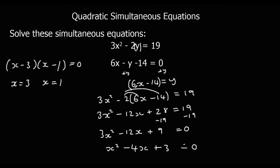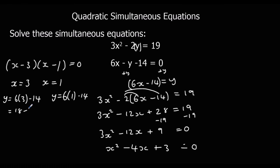Now to find the y values I substitute into y equals 6x minus 14. So y equals 6 times 3 minus 14, which is 18 minus 14 equals 4. Or y equals 6 times 1 minus 14, which is 6 minus 14 equals minus 8. So our solutions are x equals 3, y equals 4 and x equals 1, y equals minus 8.